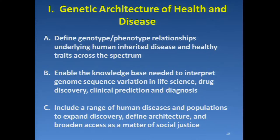In the area of genetic architecture of health and disease, a couple of topics came up. Defining genotype-phenotype relationships underlying human inherited disease and healthy traits across the spectrum — this requires scale, multiple studies, large sample sizes, and probably a variety of study designs. One comment was that it's better to do a few of these comprehensively than try to do many partially. Another main topic was to enable the knowledge base needed to interpret genome sequence variation in life science, drug discovery, clinical prediction, and diagnosis. The third main topic was to include a range of human diseases and populations to expand discovery, define architecture, and broaden access as a matter of social justice.